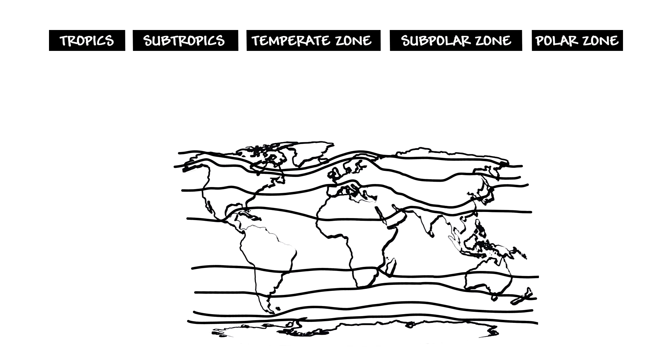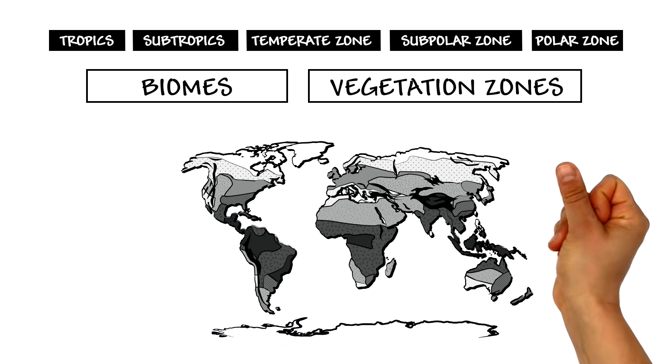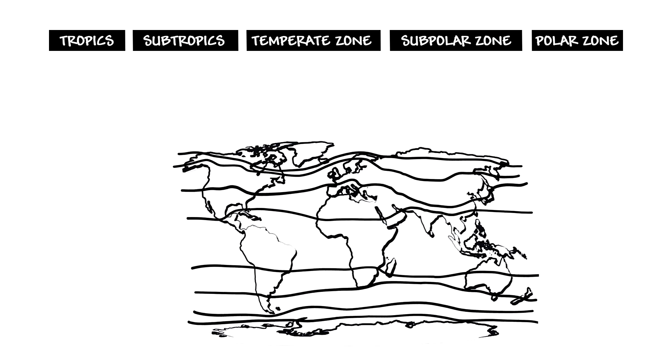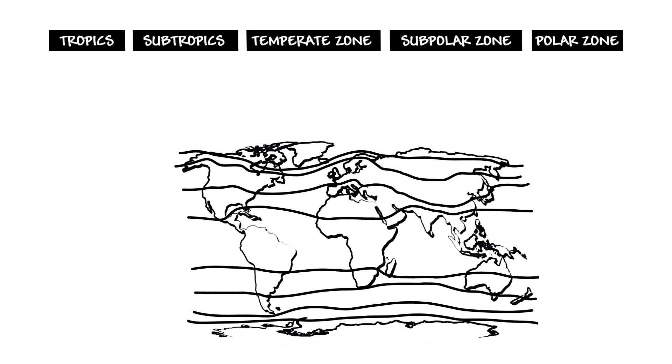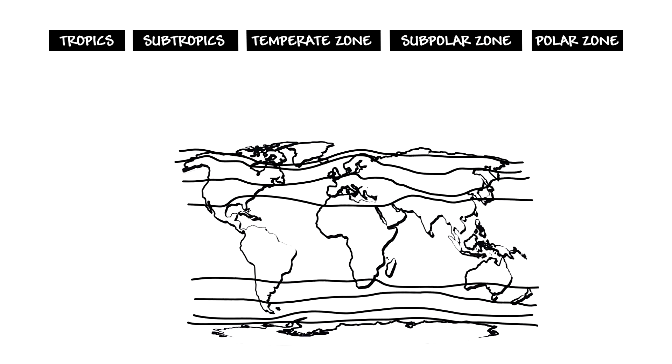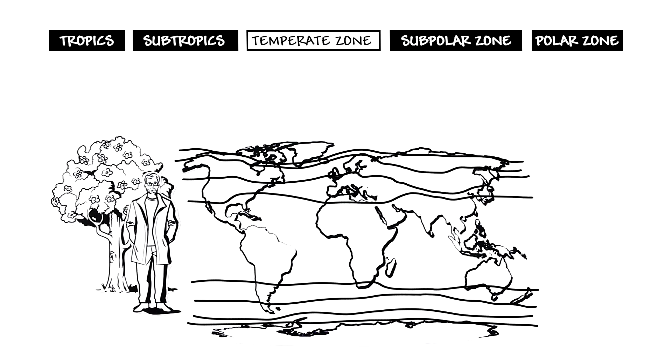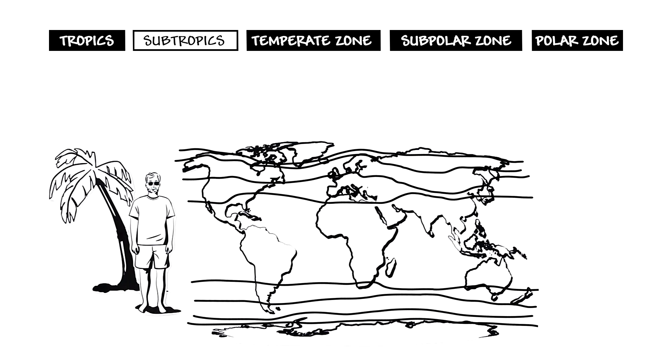These climate zones can be divided further, such as into biomes or vegetation zones. The boundaries between climate zones are rather blurred. As a result of global warming, the zones are moving, making all regions warmer and drier. So it's possible that New York may eventually look like this in the future.